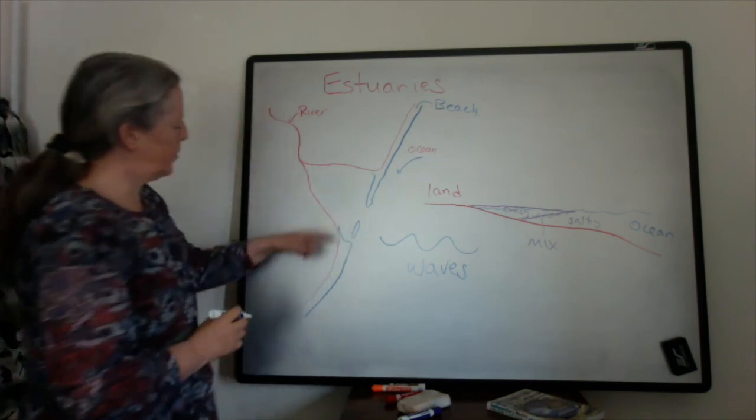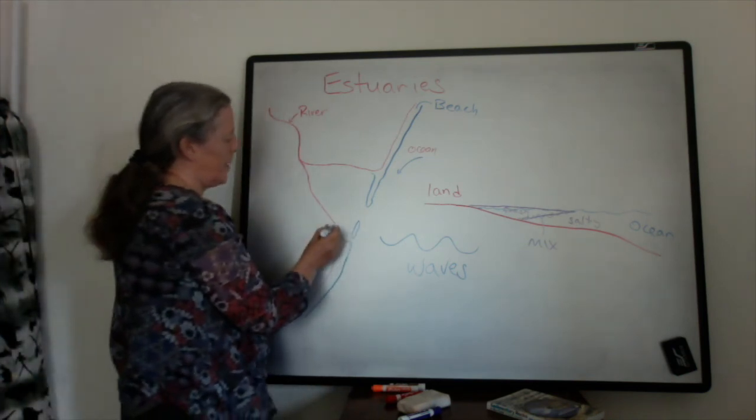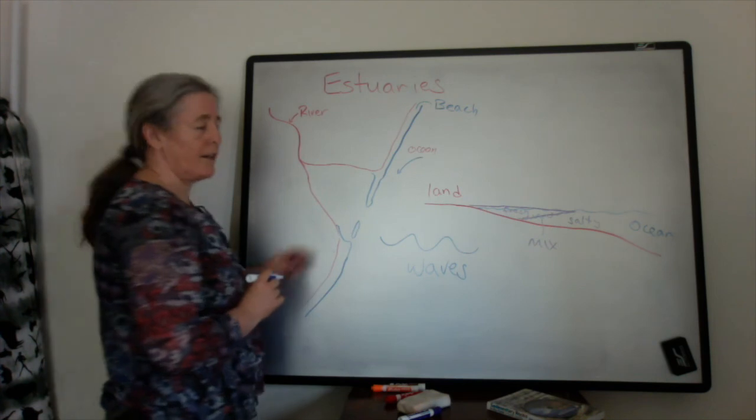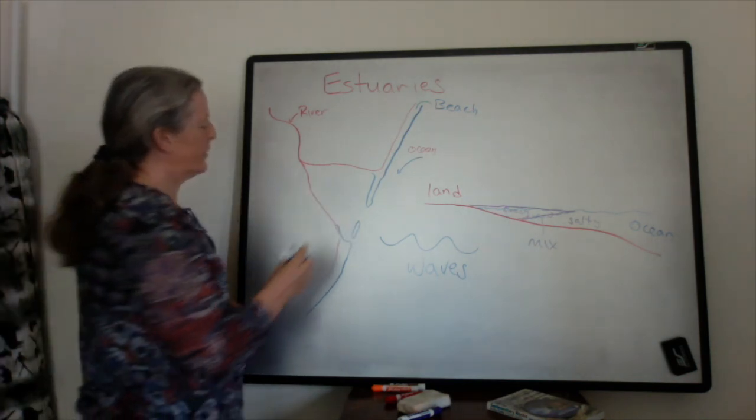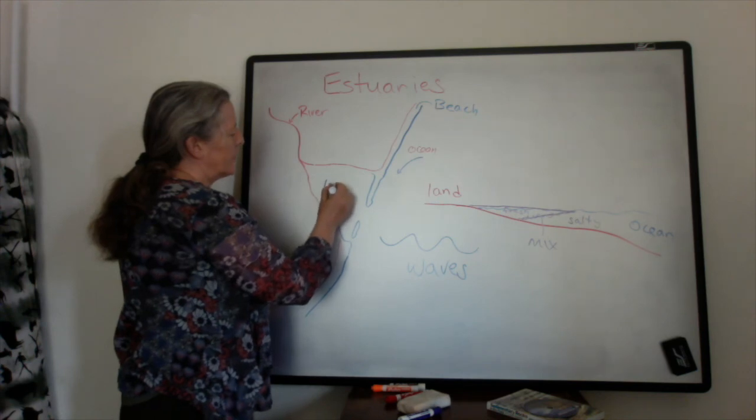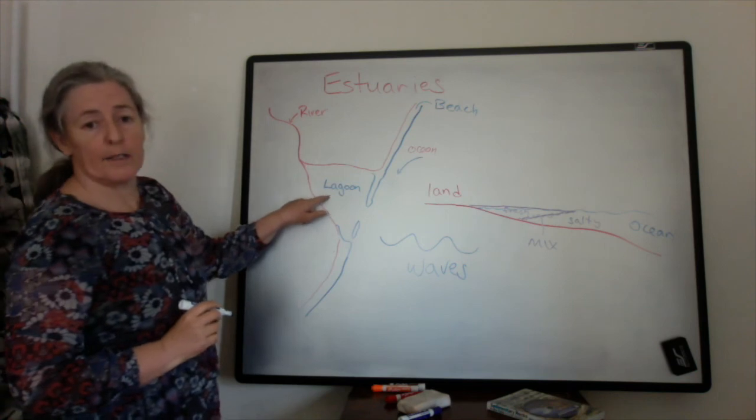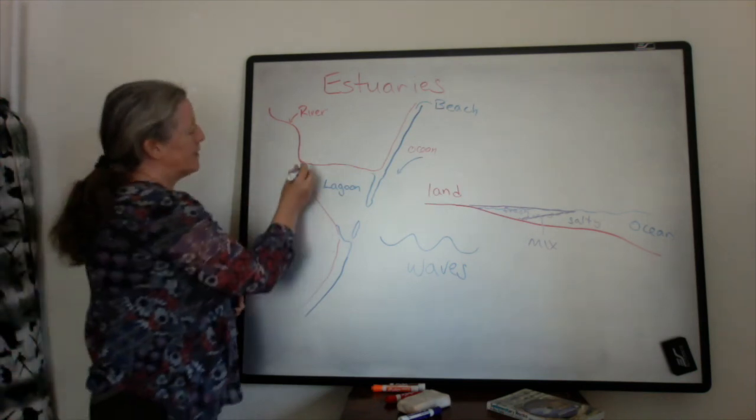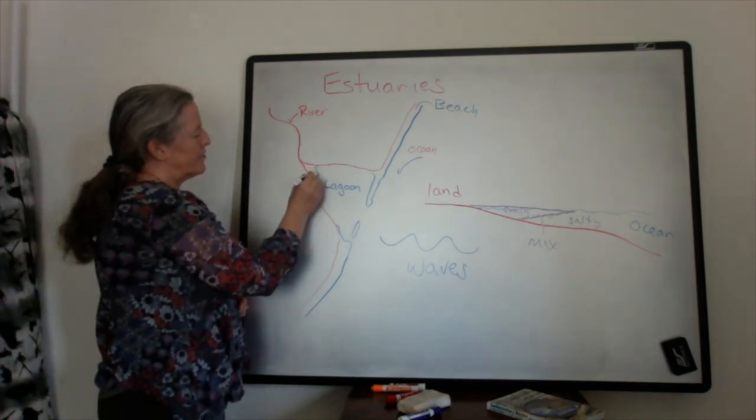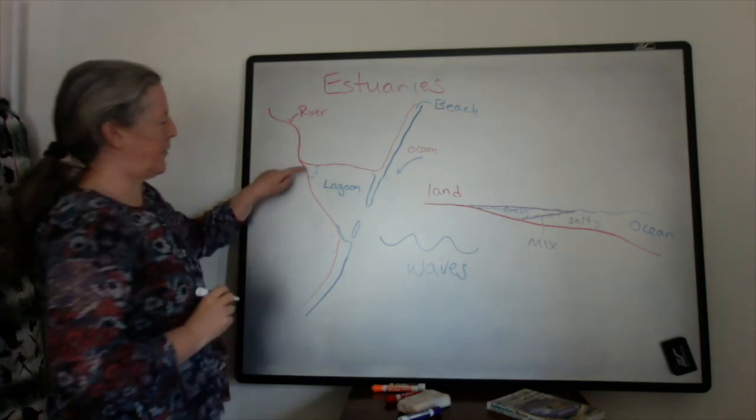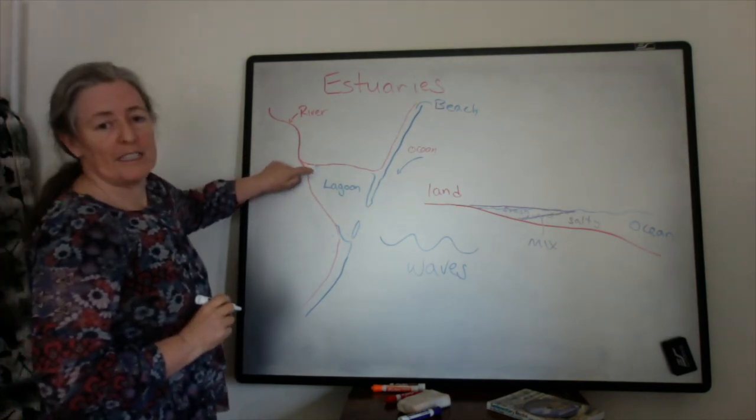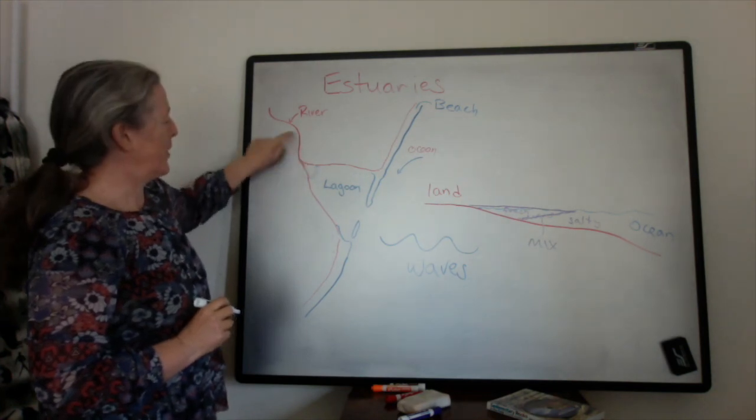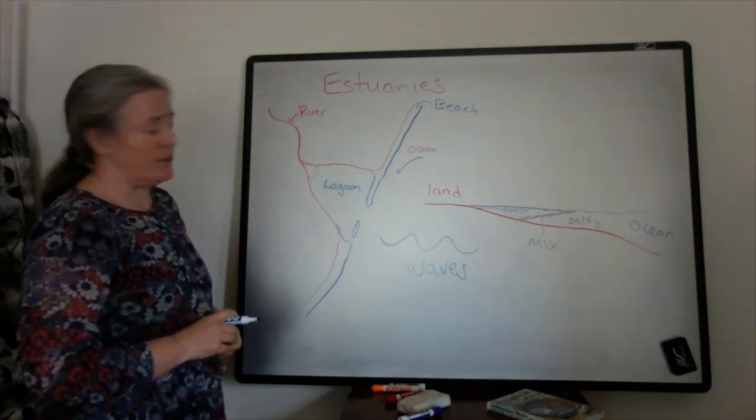They can have multiple openings or maybe only one depending on the details of the size of the waves versus the flow of the river. Then you create a lagoon behind this area. Again, you have deposition in the mouth of the river. Sometimes you might even see a little bit of a delta geometry right where the river is flowing into the lagoon.